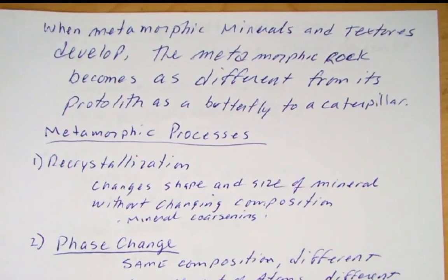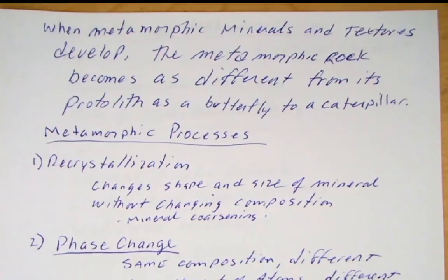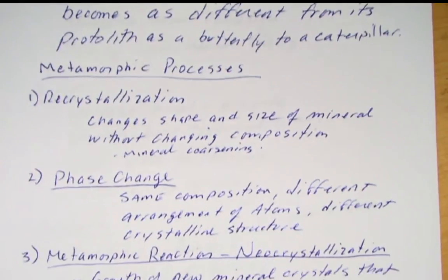When metamorphic minerals and textures develop, the metamorphic rock becomes as different from its protolith as a butterfly is from a caterpillar — the rock looks completely different from its source rock. So what are some of the processes involved in metamorphism? Let's look at these first.